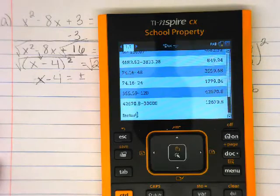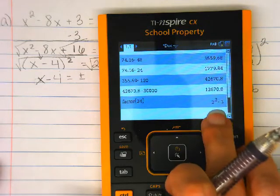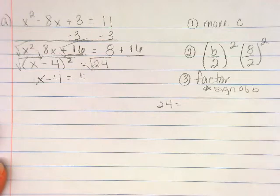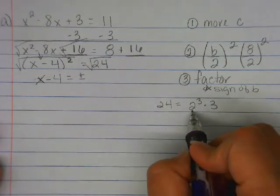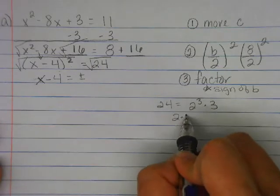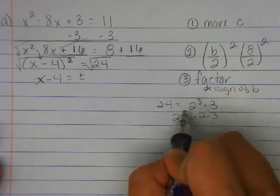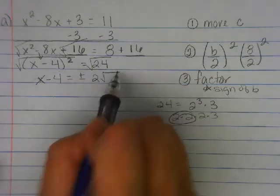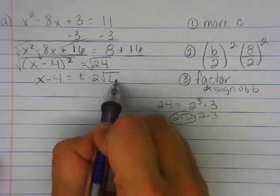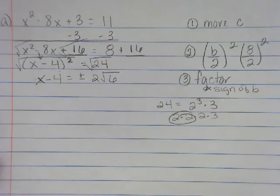And we'll get our factors, two to the third power times three. So I've got a pair, right? So this is two times two times two times three. I've got a pair. Where does my pair go? What goes inside? Six. Do you see how that lesson Monday relates? That's why we had to do it then.